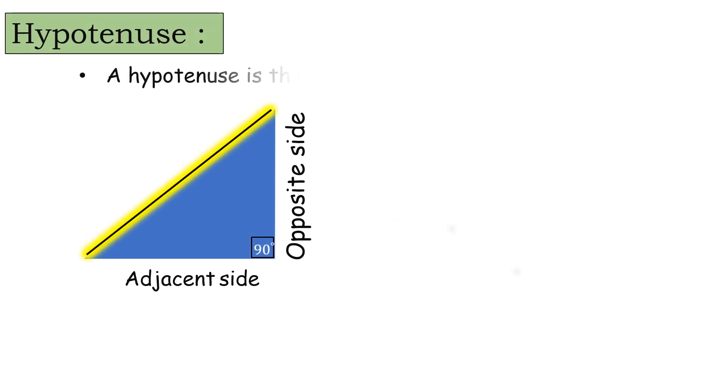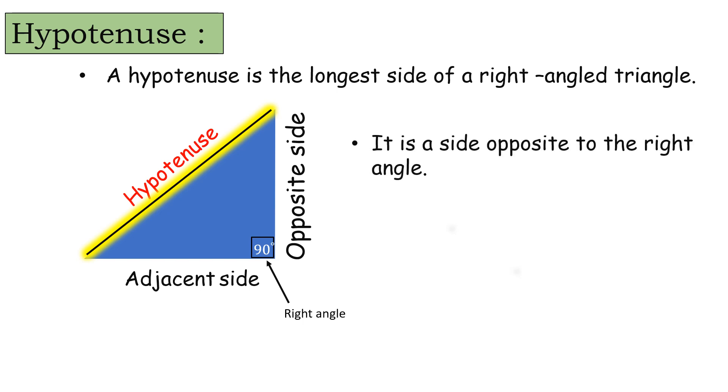Here, hypotenuse is the largest side of a right-angled triangle. It is always opposite the right angle.